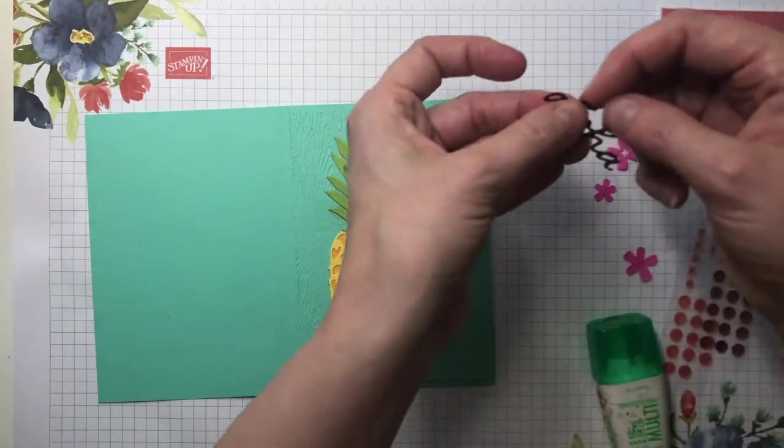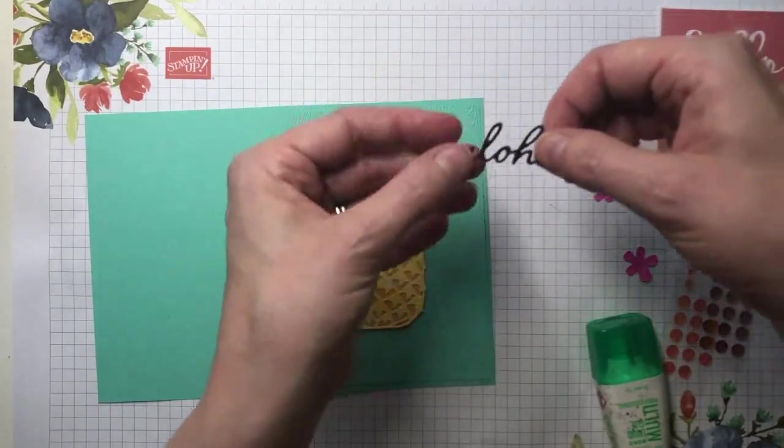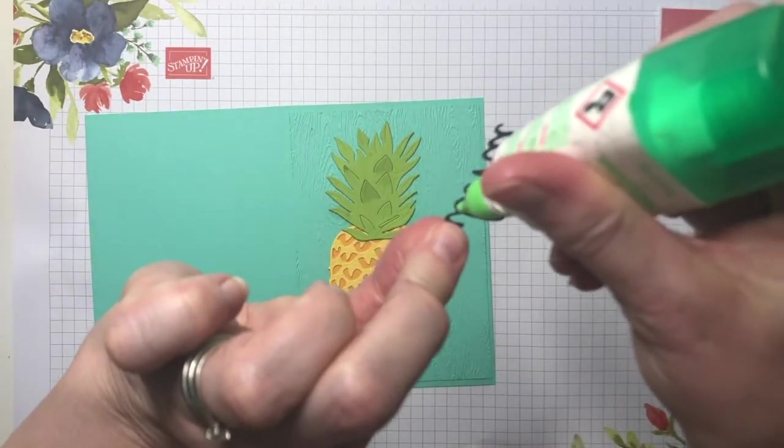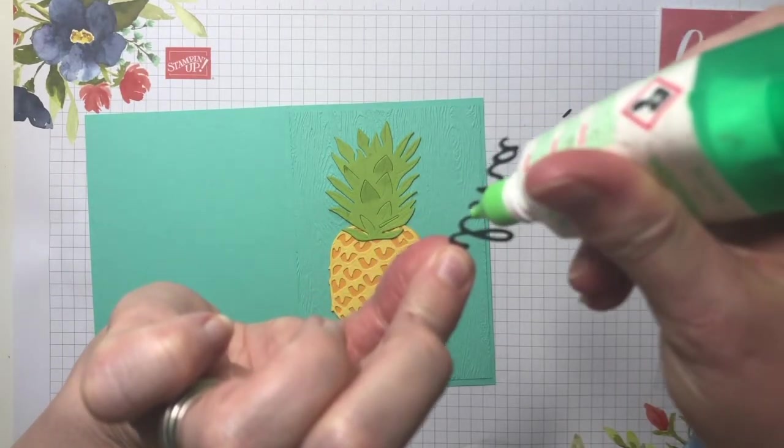And then I'm going to add my aloha. Again, just tiny dots of glue work best.